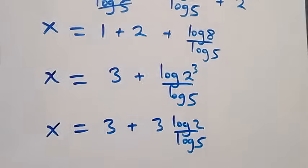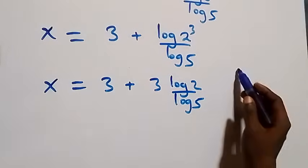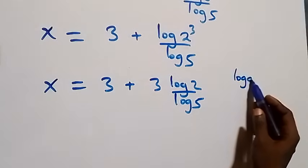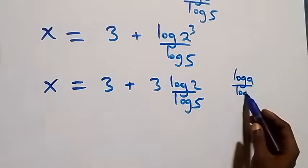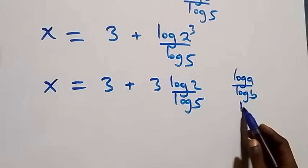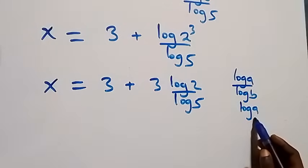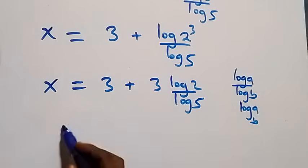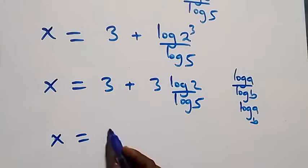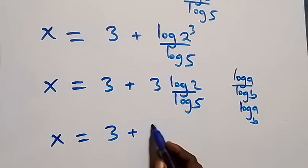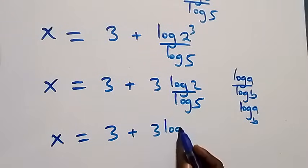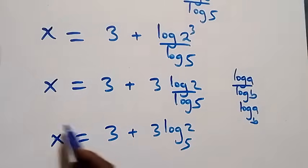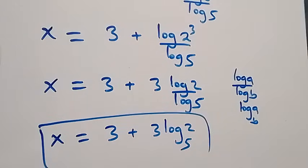Applying the change of base rule — log a over log b equals log a to base b — we get x equals 3 plus 3 log 2 to base 5. So the value of x in this given problem is x equals 3 plus 3 log₅ 2.